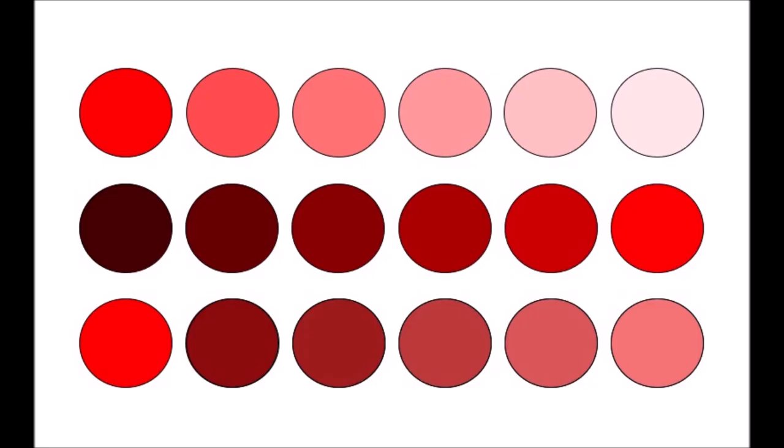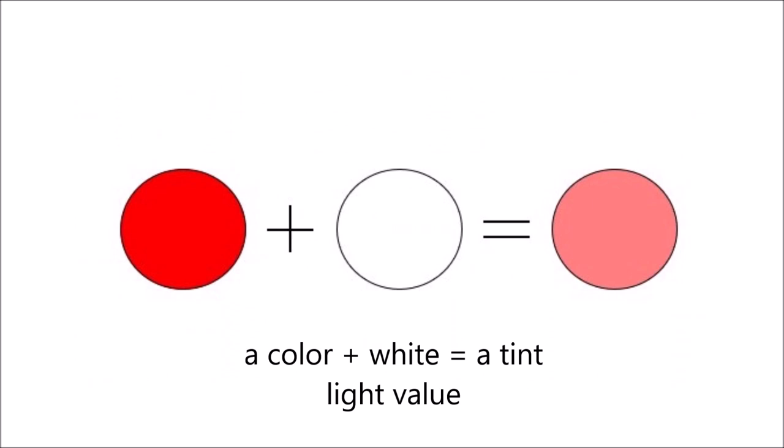A monochromatic color scheme is made up of one color and its various values. Value refers to the lightness or darkness of a color. A tint is a color mixed with white, or a light value.